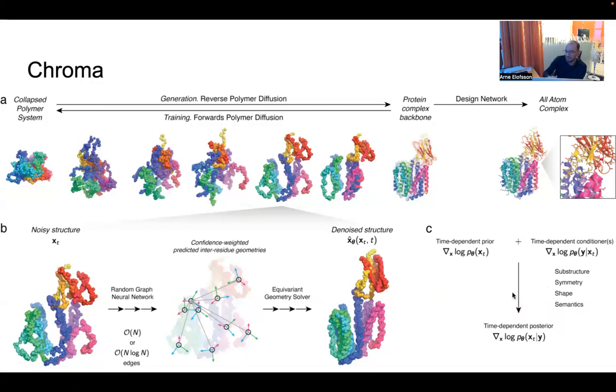As you can do with other diffusion models, you can actually use conditioning, which is like basically these biases in the denoising. So you can enforce symmetry, shape, semantics, substructure, etc. You bias your model. So if you want to design something that's only alpha helical you have a bias, or something, or if you want to design something that looks like the letter L you put a shape constraint.